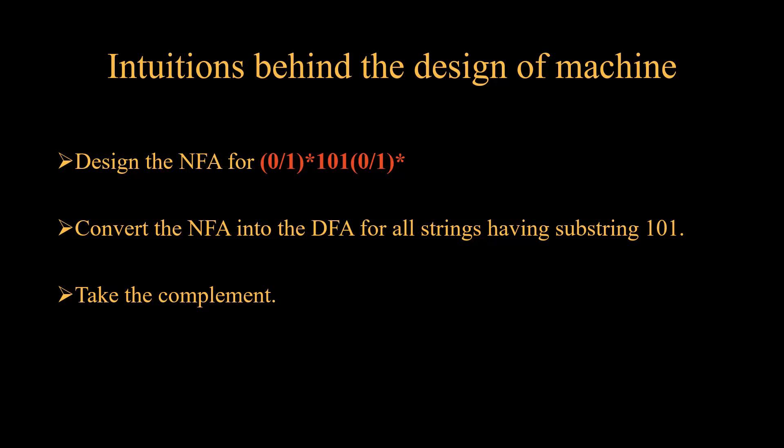We will design the NFA for the regular expression (0+1)* 1, 0, 1 (0+1)*. Why are we considering this? Because (0+1)* is the universal string followed by substring 1, 0, 1 and then again the universal set (0+1)*. We will convert the NFA corresponding to this regular expression to the DFA for all strings having substring 1, 0, 1, and then we will take the complement.